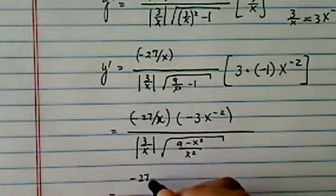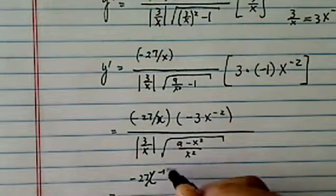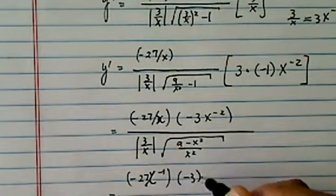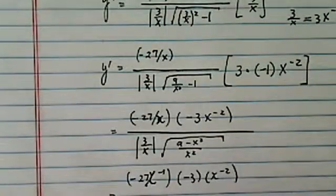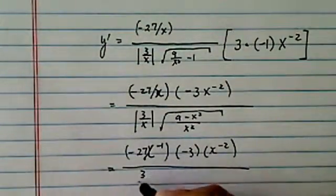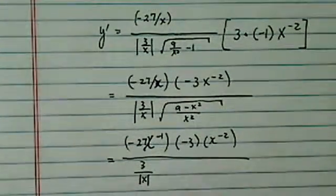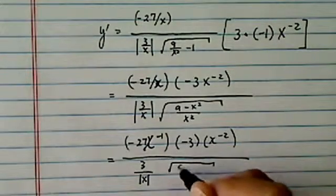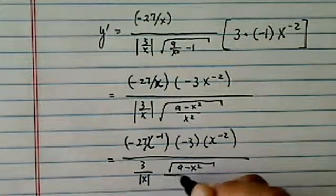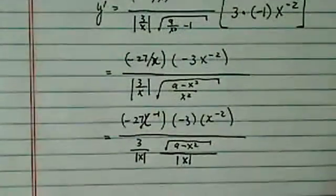I have a minus 27 over x, which is really times x to the minus 1, minus 3, x to the minus 2. So now I can combine that chunk over here. I have a 3 absolute of x, because 3 is always positive, I don't really have to worry about that one. And then on the top I have 9 minus x squared. And on the bottom I have this one as well.